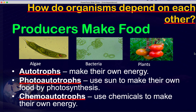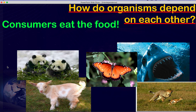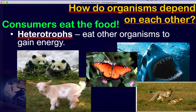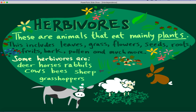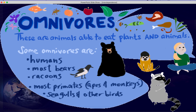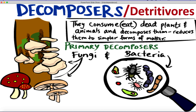Different levels of organisms: producers are at the bottom and make the food. Autotrophs make their own energy from the sun — mainly plants. Photoautotrophs use the sun, while chemoautotrophs use chemicals to make energy. Most of us are consumers — known as heterotrophs — because we cannot make our own food. Consumer types include herbivores (eat only plants), carnivores (eat mainly meat), omnivores (eat plants and animals, like most humans), and detritivores or decomposers (eat dead and decaying material).